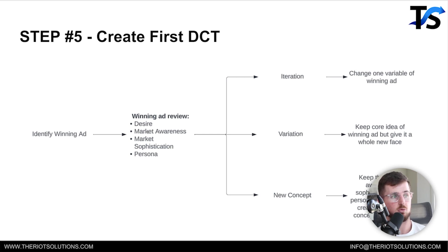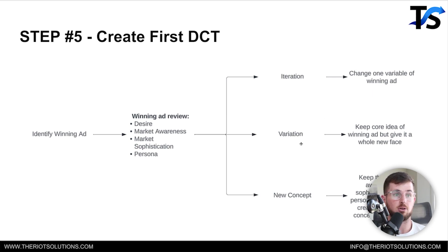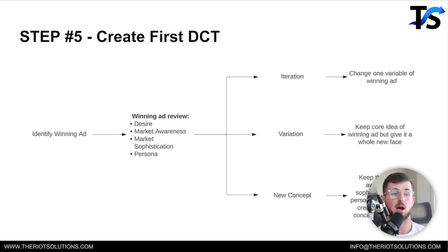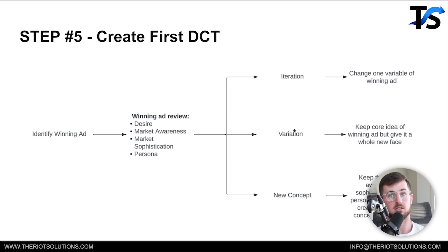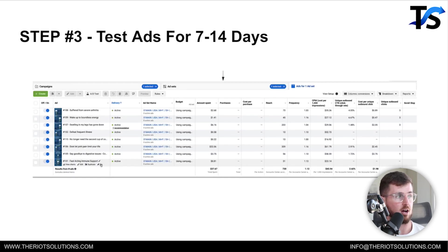That one winning ad tells me a particular positioning in the marketplace we can leverage. Once we do that, we create our first DCT. We identify the winning ad and do a winning ad review — what desire did we test, what market awareness, market sophistication, persona. Now we know what desire, awareness, sophistication, and persona works. We might do an iteration changing one variable, or a variation keeping the core idea but giving it a whole new face, or a whole new concept keeping the same parameters. Those are three types of ads we can create.